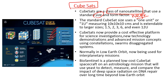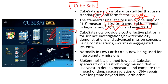Cube satellites are measured in the size of one unit. Ideally, one unit is 10×10×10 centimeters, and they are extendable in multiples of 0.1, 0.5, and up to 12 units. A major advantage is their low cost — since they are small and lightweight, they are cost-efficient and can be built rapidly for simple technology experiments, scientific research, educational projects, and commercial projects in space.